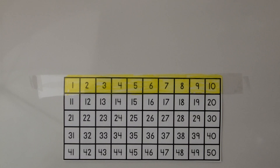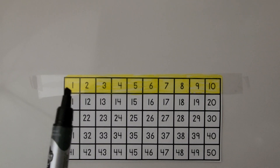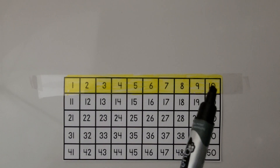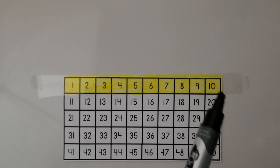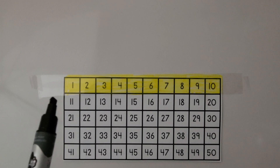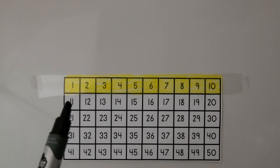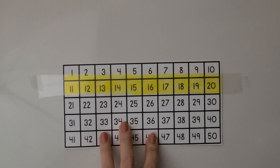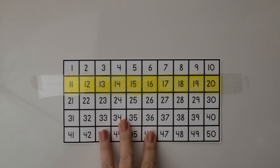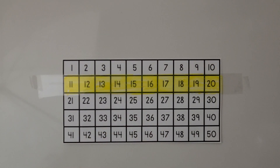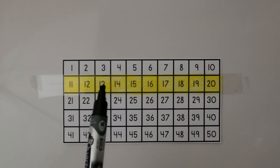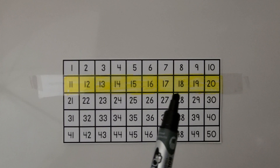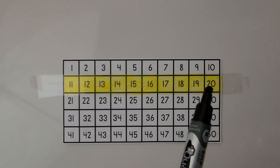So here we have a 50 chart. As we count, we start with 1 and count all the way to the end of the row to 10. Then to count on after 10, we go to the next row below it: 11, 12, 13, 14, 15, 16, 17, 18, 19, 20.